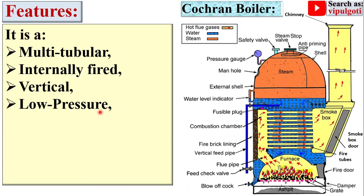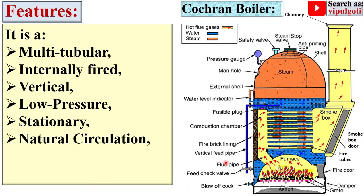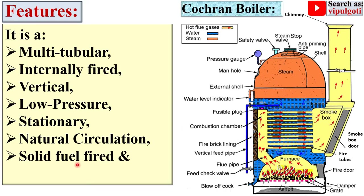It is a low pressure boiler. According to steam pressure, there are three types: low pressure, medium pressure, and high pressure boiler. It is a stationary boiler because it cannot move from one place to another. It uses natural circulation, where water circulates due to density difference. It is solid fuel fired — coal is supplied in the furnace. Finally, it is called a fire tube boiler because flue gases flow inside the tubes. If water were inside the tube, it would be called a water tube boiler.